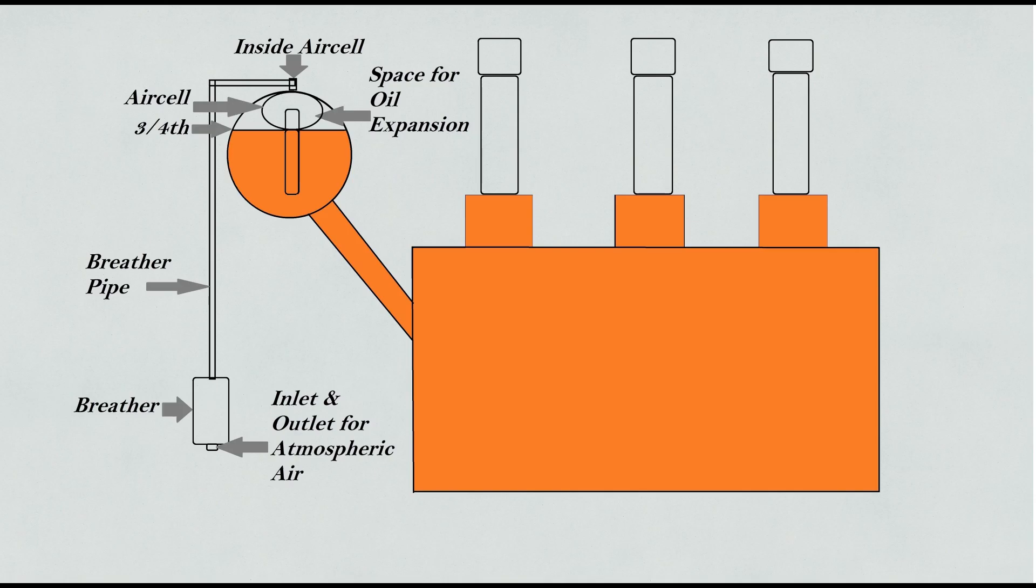Hence, when transformer oil temperature drops, oil contracts, and the oil level in the conservator goes down. So to compensate this contracted volume of oil, atmospheric air gets inside the air cell through the breather, and the air cell expands, compensating for the contracted oil volume.